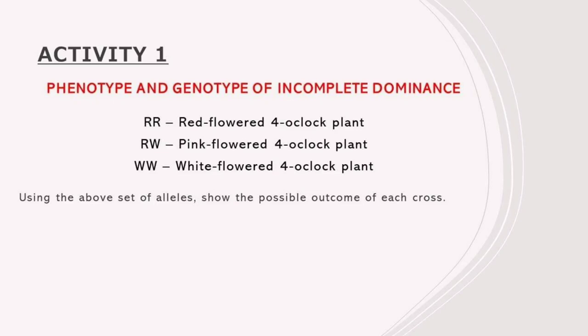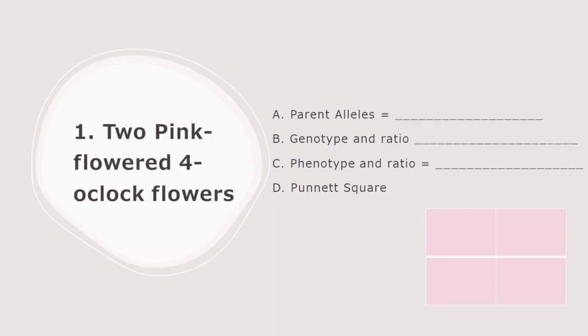Activity 1. Here are the given phenotypes and genotypes of incomplete dominance. Using the above set of alleles, show the possible outcome of each cross. You need to identify the parent alleles, genotype and phenotypic ratio, and show your solution using the Punnett square.